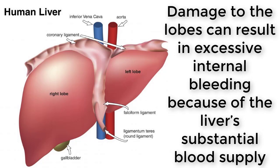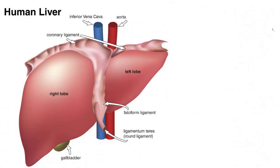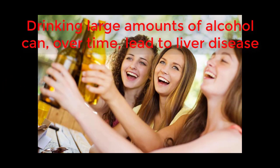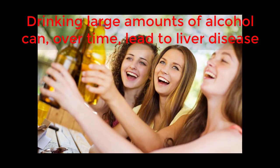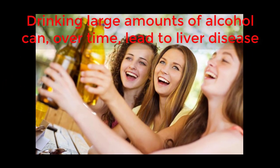Damage to the lobes can result in excessive internal bleeding because of the liver's substantial blood supply. It can also decrease the efficiency of the liver, making it hard to process blood to remove compounds that might be hazardous.